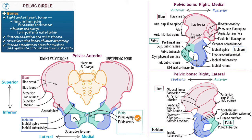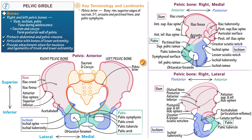Finally, label the pubis and indicate the pubic crest, which is the ridge of pubic bone that extends laterally from the pubic symphysis and is continuous with the pectineal line. Also indicate the pubic tubercle and the pubic arch, which is the anterior arch formed by the union of the right and left pelvic bones. Now let's learn some key terminology. The pelvic brim is formed by the superior edges of the sacrum, arcuate and pectineal lines, and pubic symphysis — it encloses the pelvic inlet. The pelvic inlet, also referred to as the aperture, is the circular opening between the abdominal and pelvic cavities.